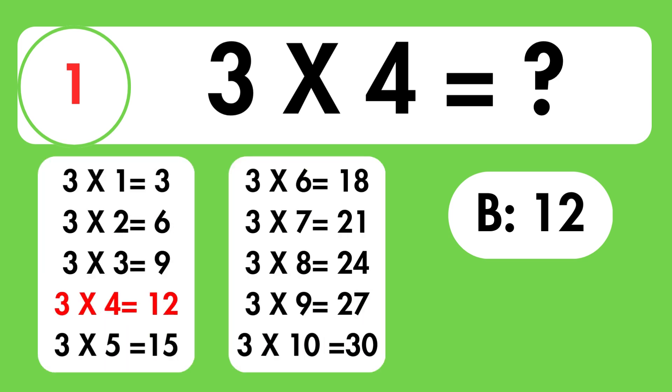3 multiplied by 4 is equal to 12. Did you get it right? Give yourself a star if you did.